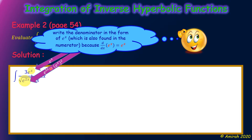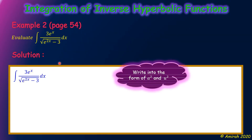So we write the denominator in the form of e^x, which is also found in the numerator. Why? Because the derivative of e^x gives back e^x. After that, we write into the form of a² and u².